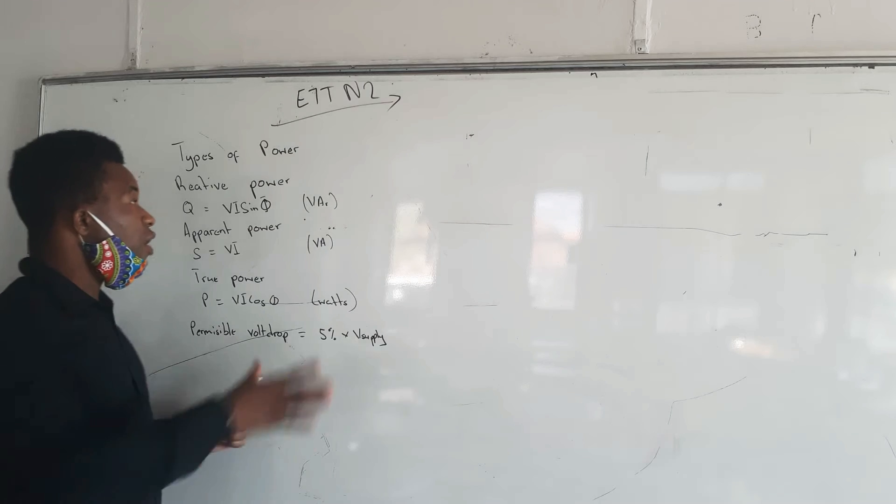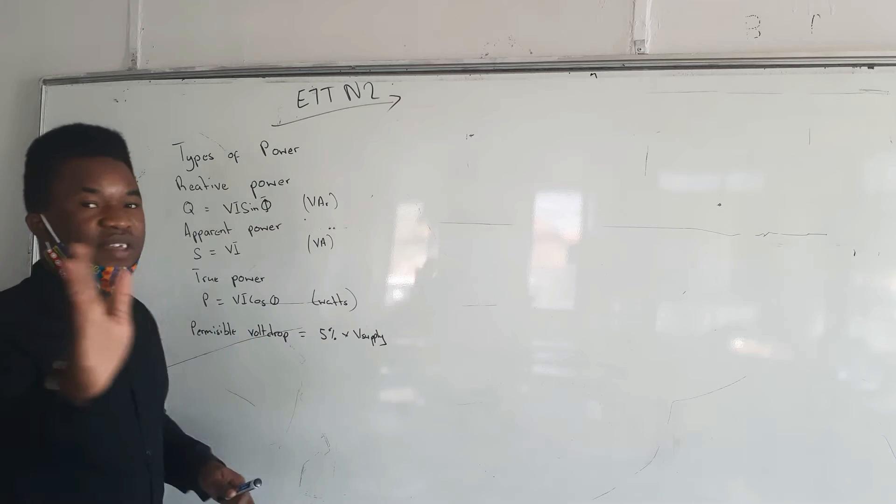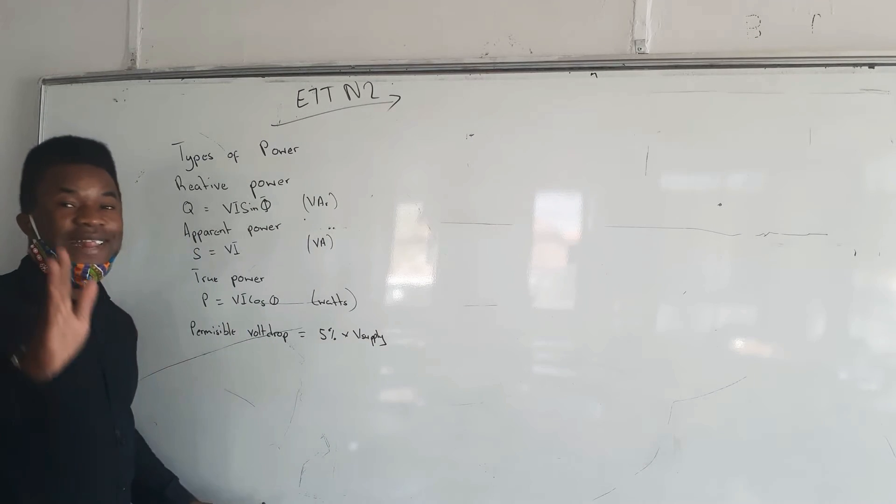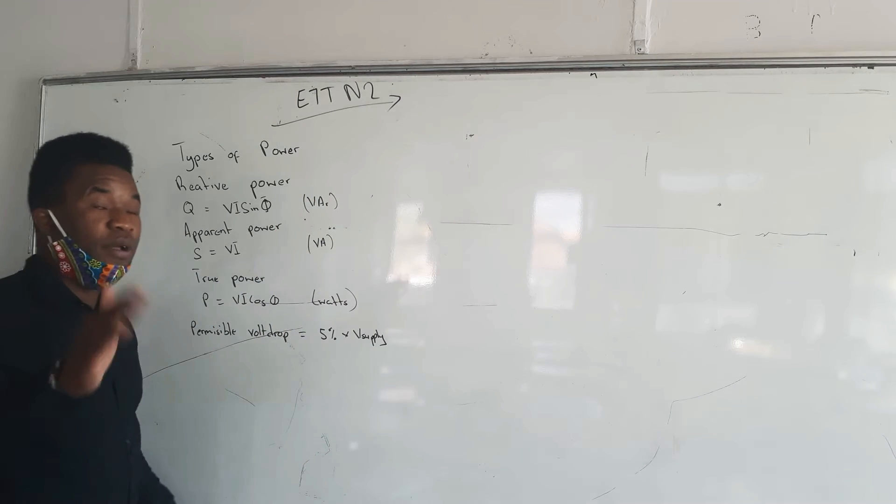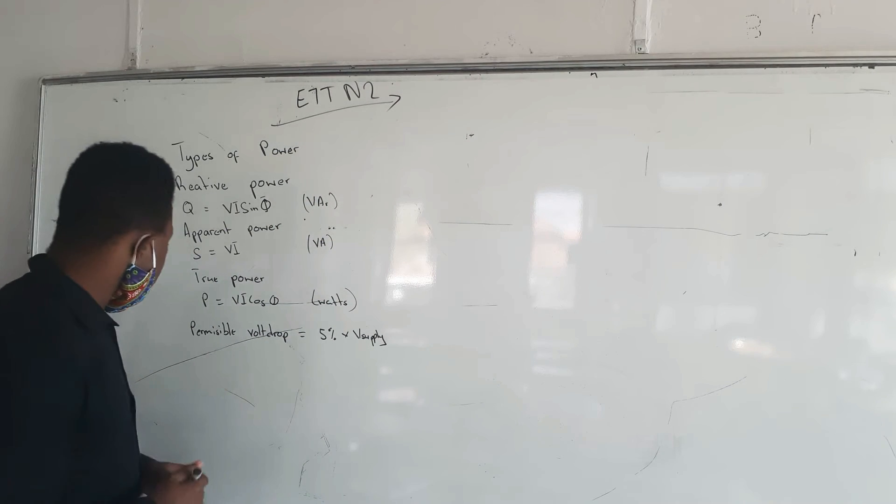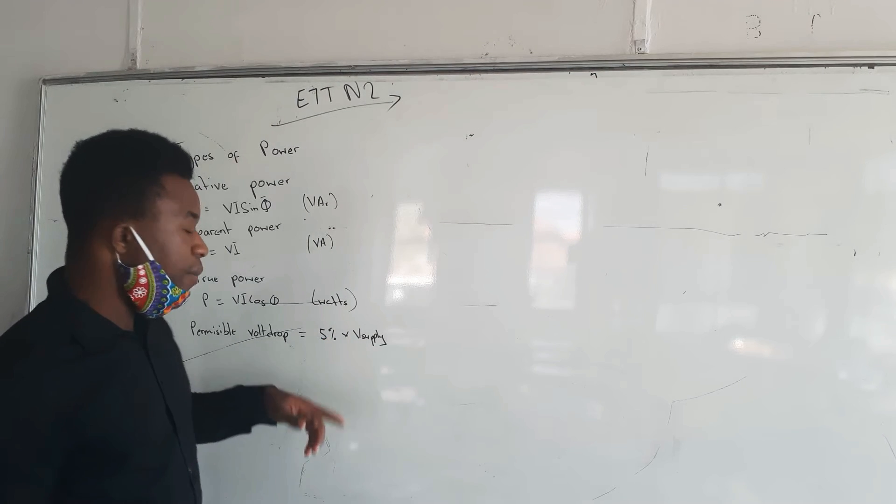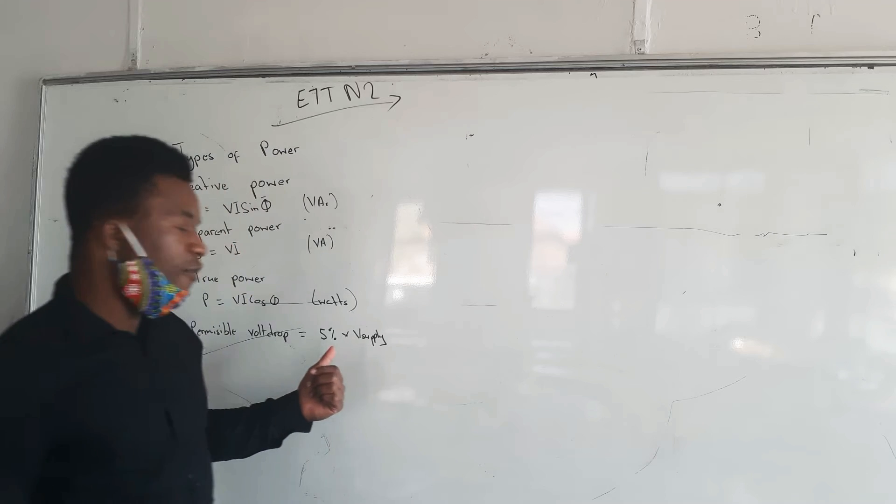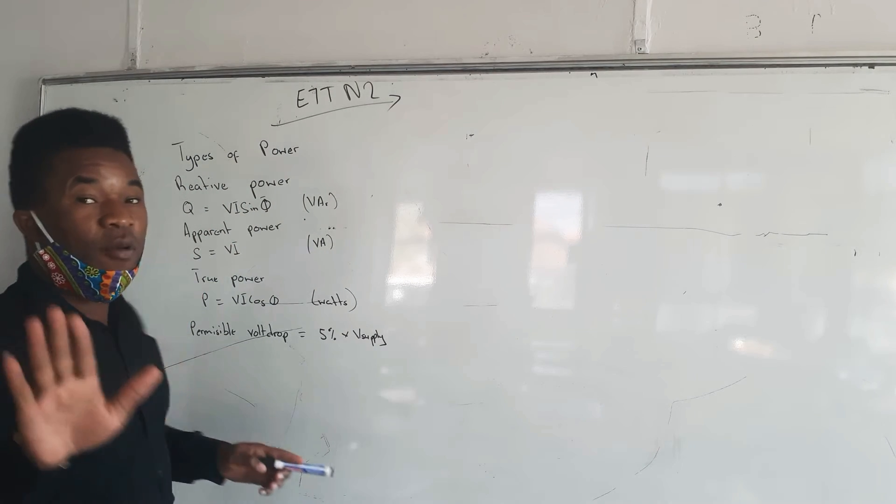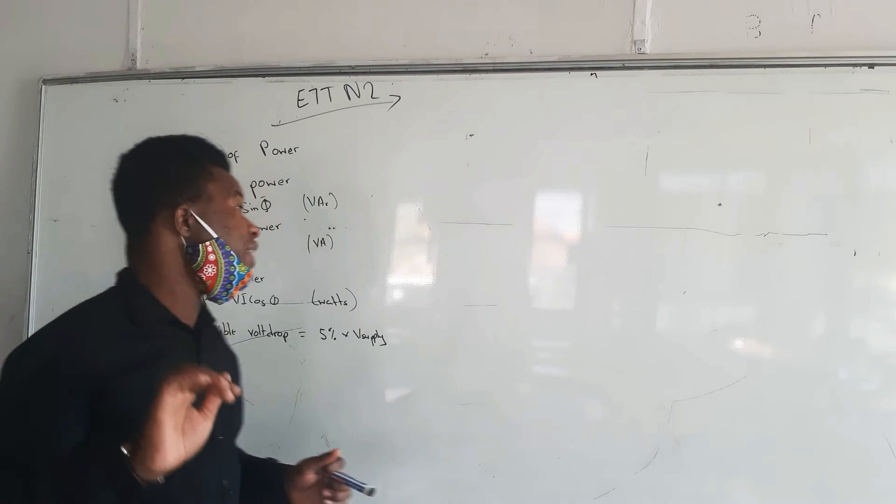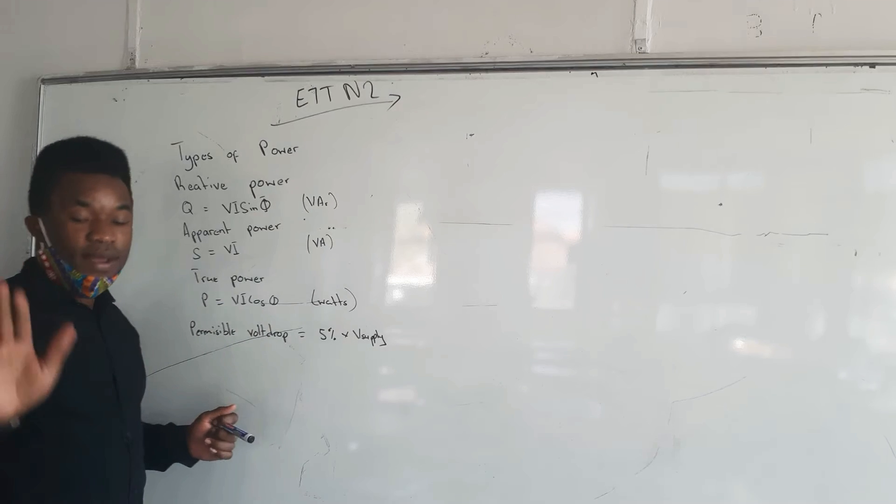How do you determine which power you're given? You can check either with the SI unit, or sometimes they can state which type of power. We also have the formula to calculate permissible voltage, which is 5% multiplied by the supply voltage. Sometimes they can give you to calculate the voltage or the current.